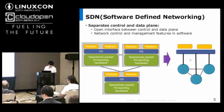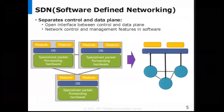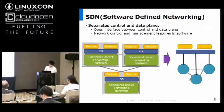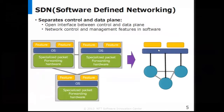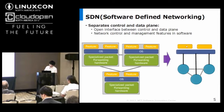The right side shows the new network architecture in SDN. As you can see, the control plane and data plane are completely separated. A centralized controller controls many data planes. This controller runs on commodity hardware — it doesn't need special hardware. So we can implement new features by ourselves. In the SDN world, we can avoid vendor lock-in.